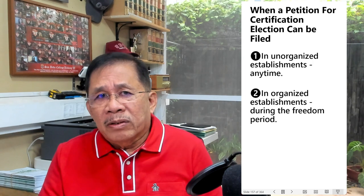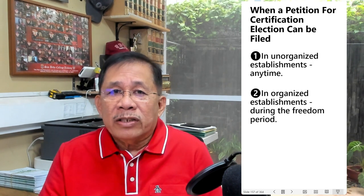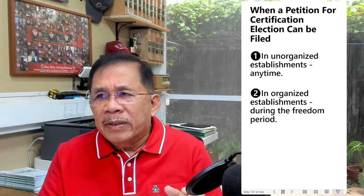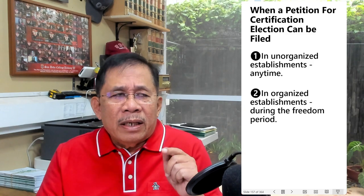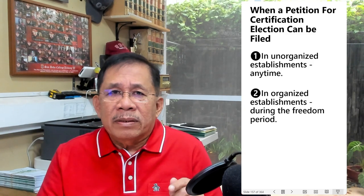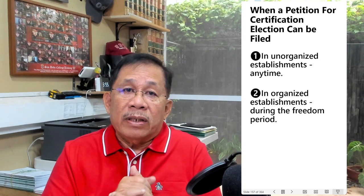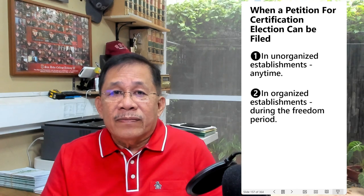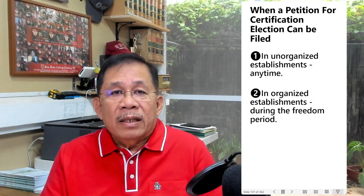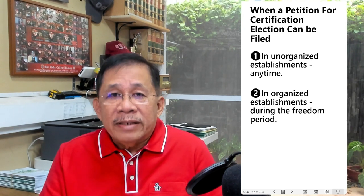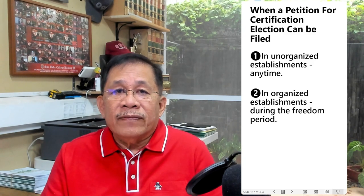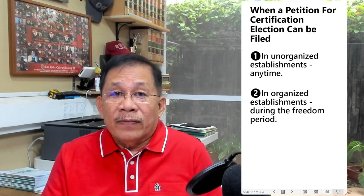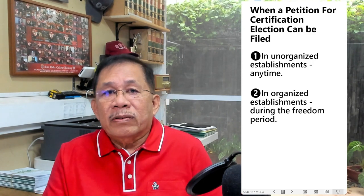The question of when a petition for certification election can be filed depends on whether the establishment is organized or unorganized. In an unorganized establishment — where there is no certified bargaining agent for a specific bargaining unit — the petition can be filed anytime. In an organized establishment — where there is a certified bargaining agent for a particular bargaining unit — the petition can only be filed during the freedom period.